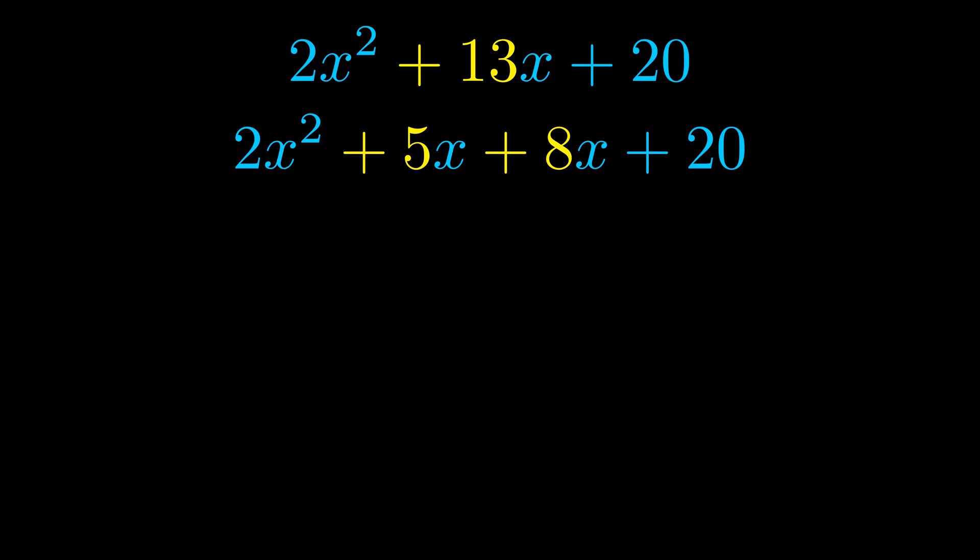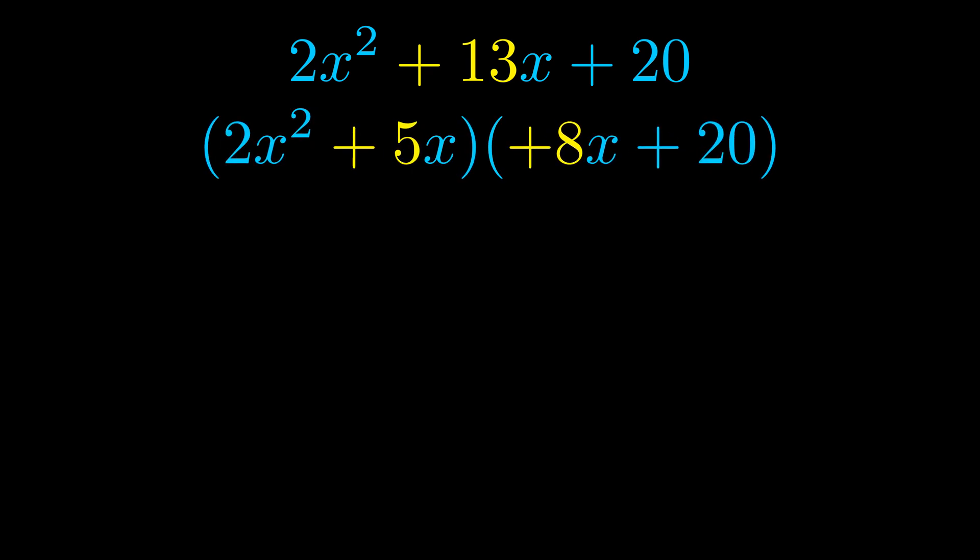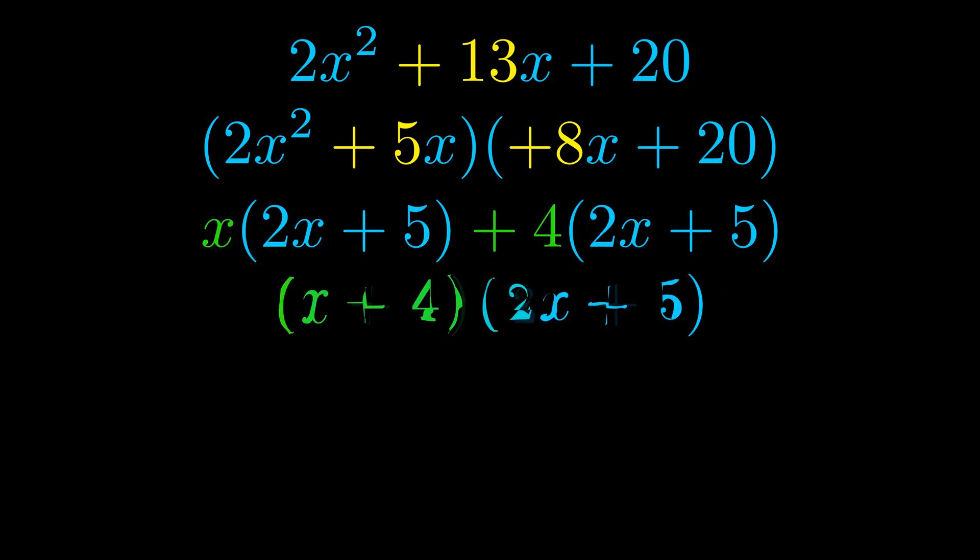Once we've done this we put parentheses around the first term and the last term, and we do that so that we can take the greatest common factor out of both terms. We can see the greatest common factor is now outside in green. Notice also how what remains inside of the parentheses is the same in both cases. The blue values are the same.